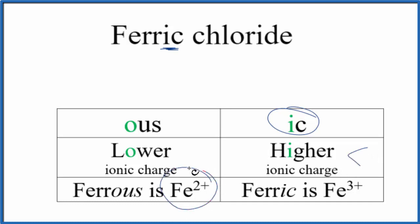Iron can be either Fe2 plus or Fe3 plus. So when I see that IC, I know it's Fe3 plus. So I'm going to put Fe, and that'll have that 3 plus.